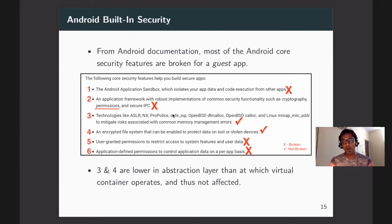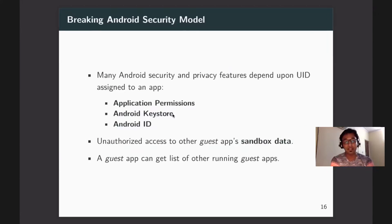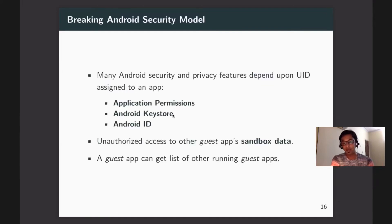Many Android security mechanisms depend on UID: application permissions, KeyStore, Android ID, and others. Broken mechanisms include unauthorized access to other guest apps' sandbox data, a guest app being able to list other running or installed guest apps. From API 22 onwards, listing running apps was disabled in Android, but inside a virtual container it is still available due to the shared UID.